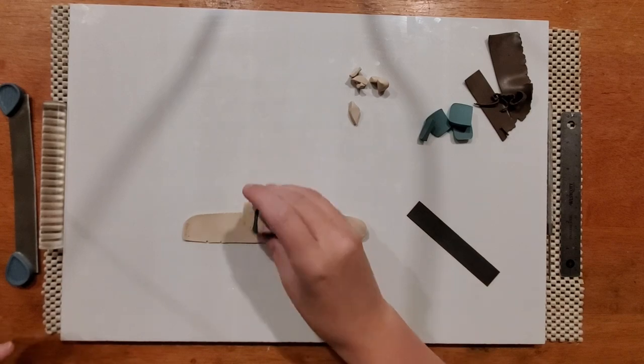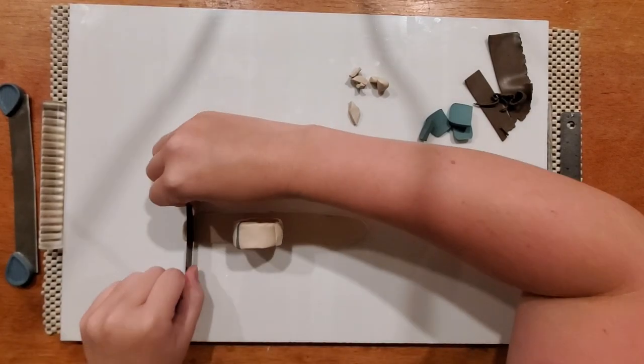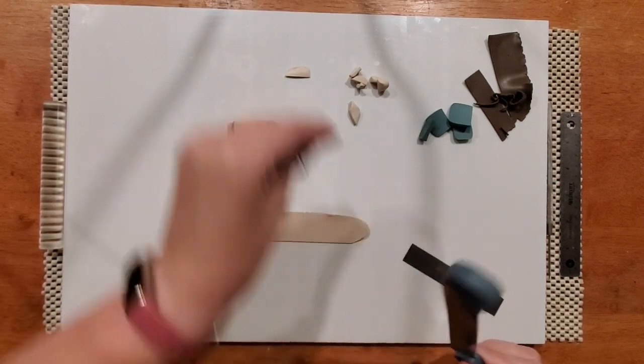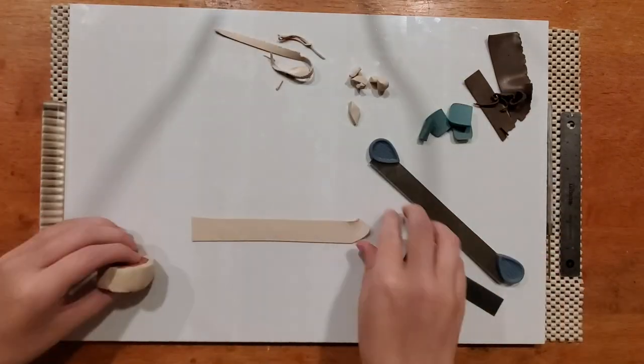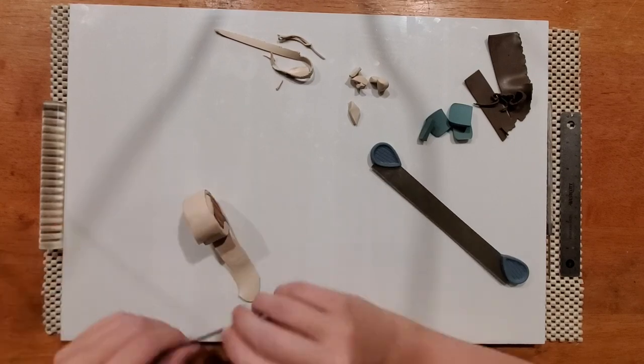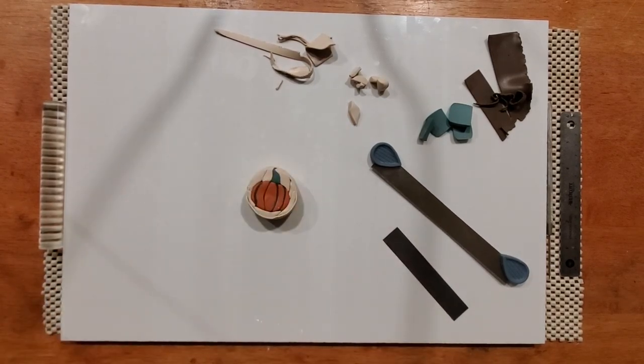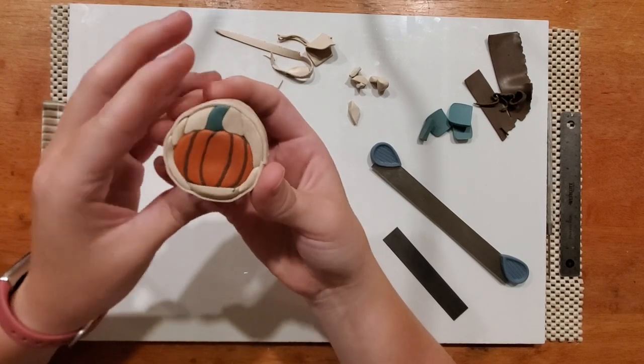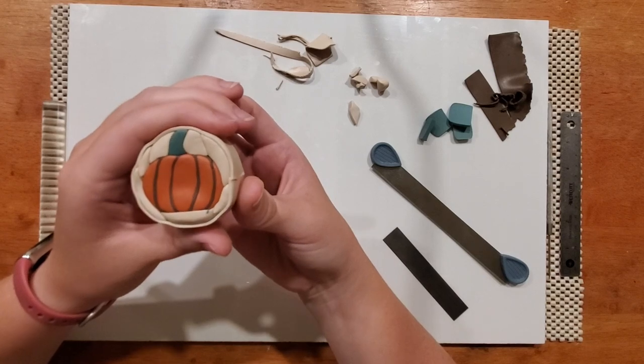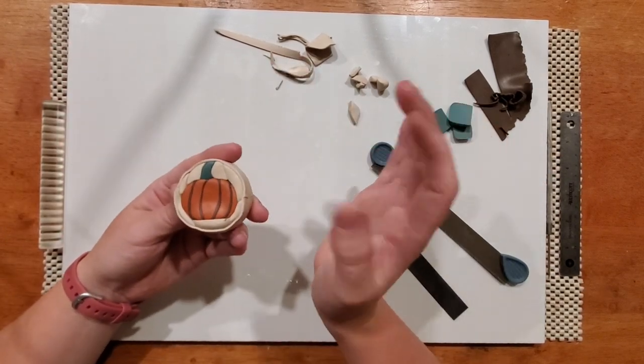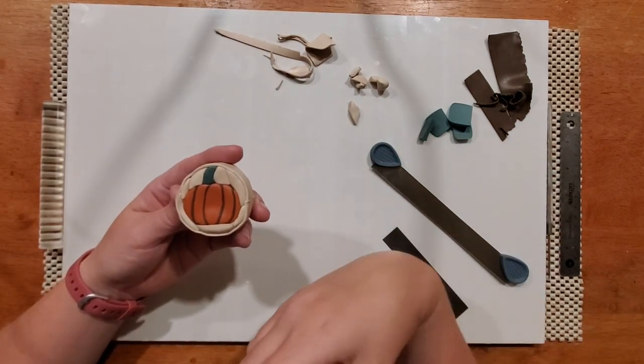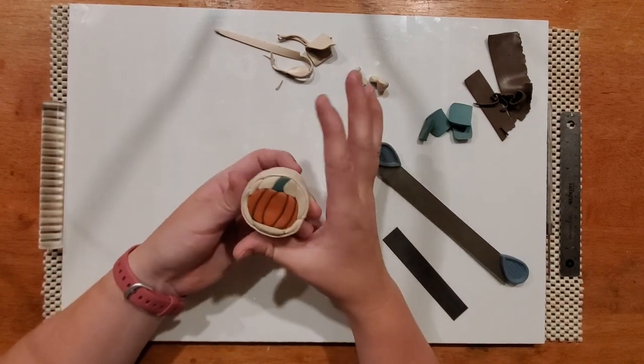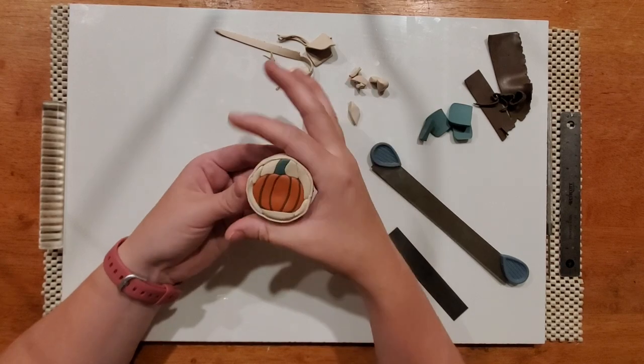Okay, so I rolled this strip out to a four on my pasta machine and now I'm just going to give it a nice wrap. Okay, so there is the cane that we're going to start with. So now I would normally let this sit for maybe an hour or overnight depending on how I'm feeling, just to give it time to cool down from me touching it. It doesn't smush as much when you reduce it then, but for the sake of this video I'm just going to go ahead and start reducing it.